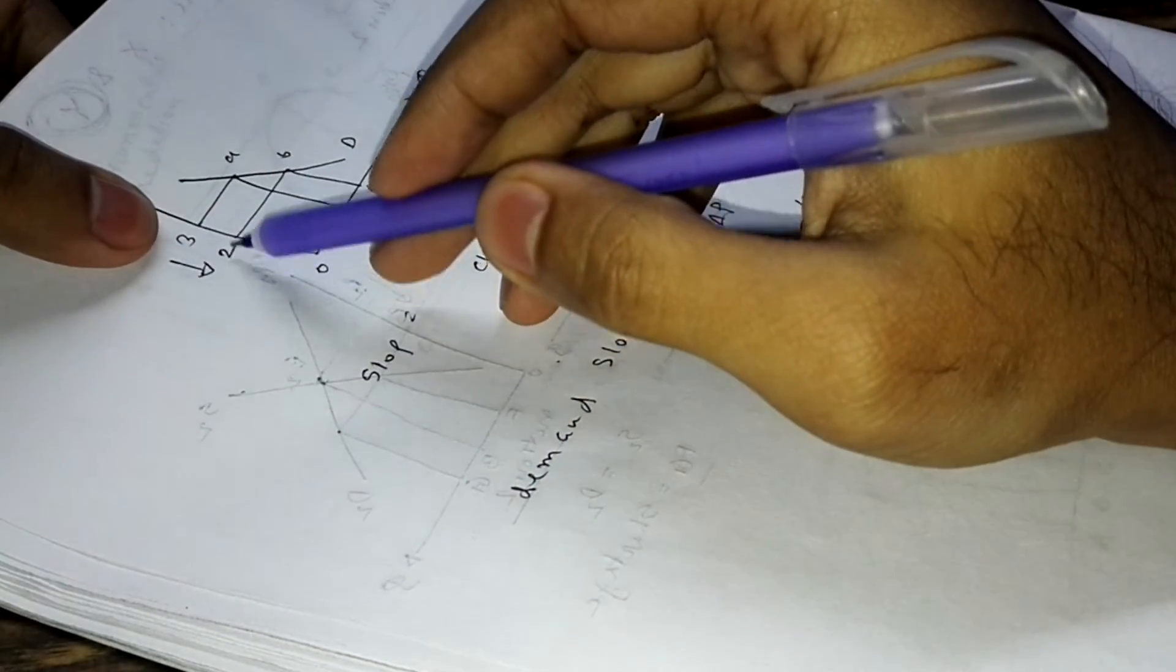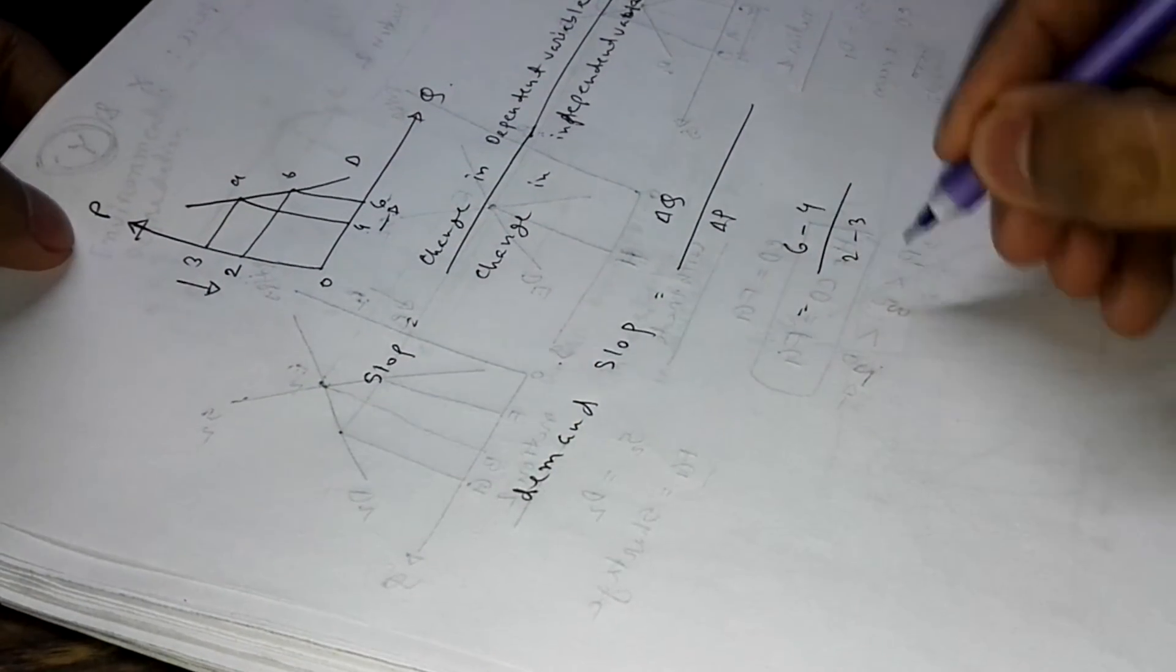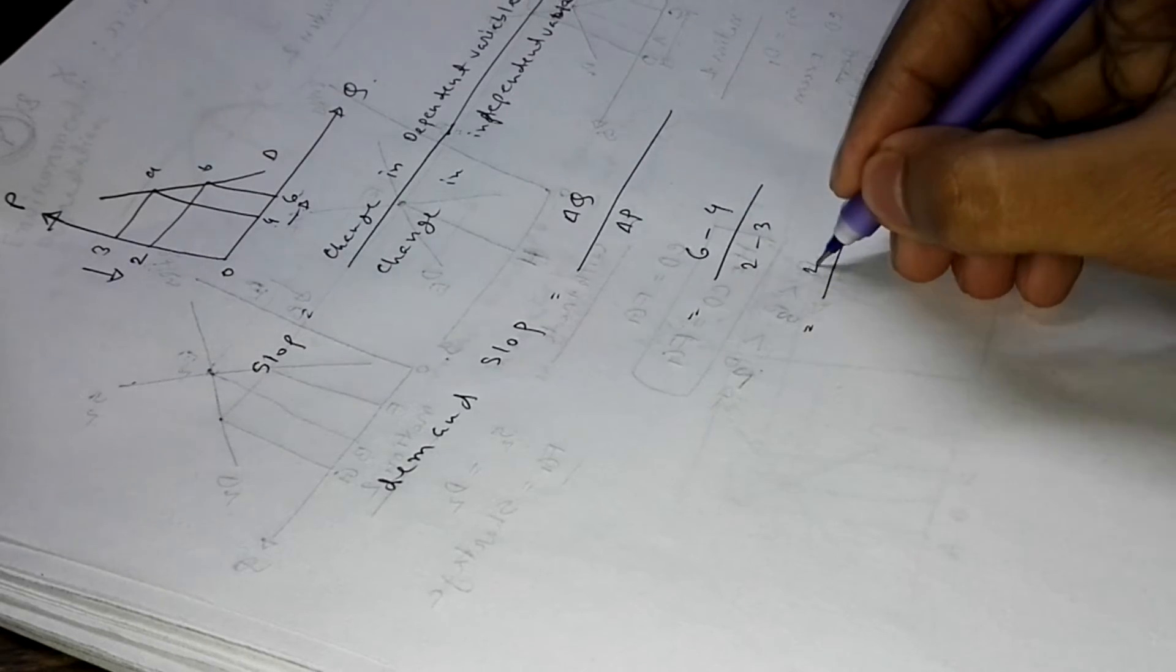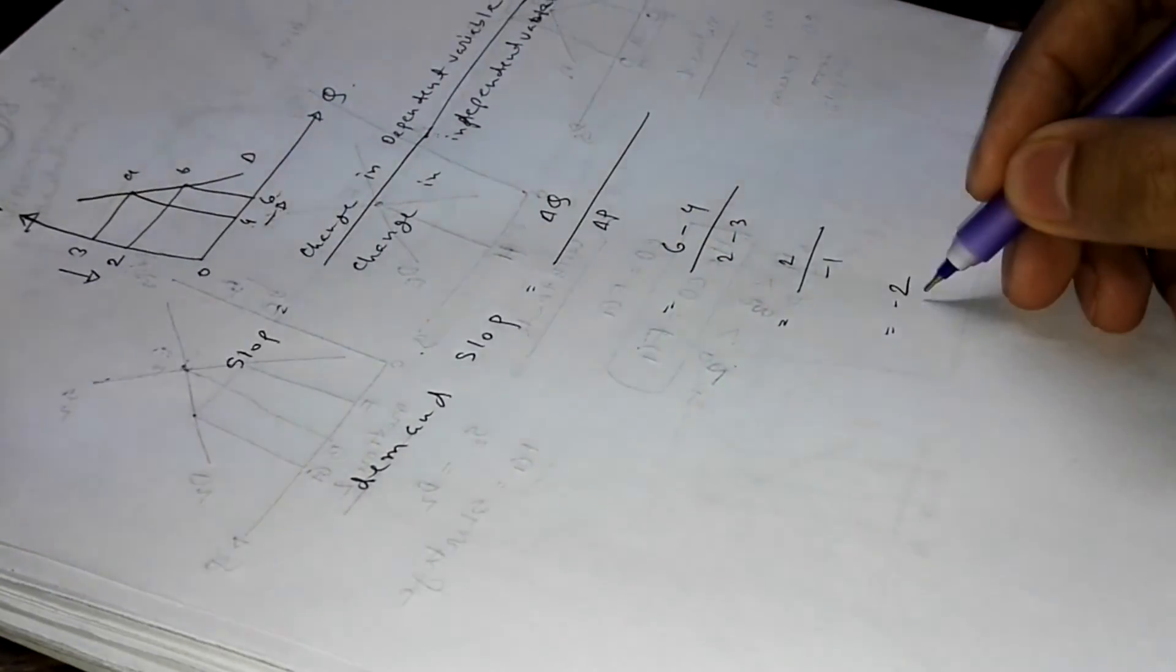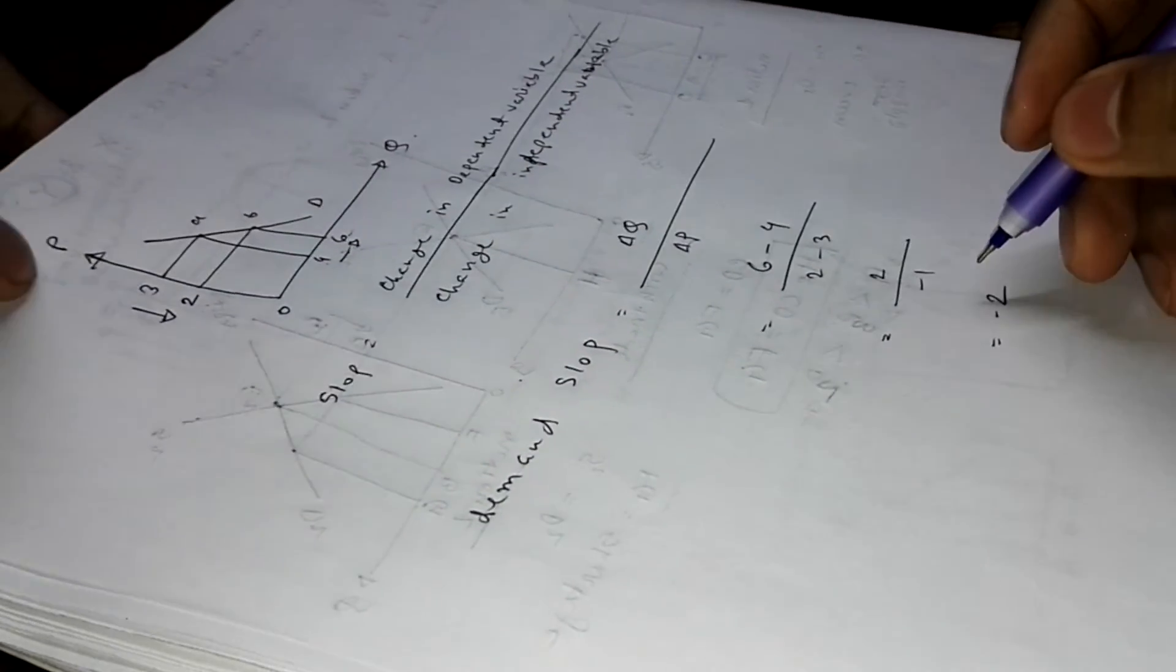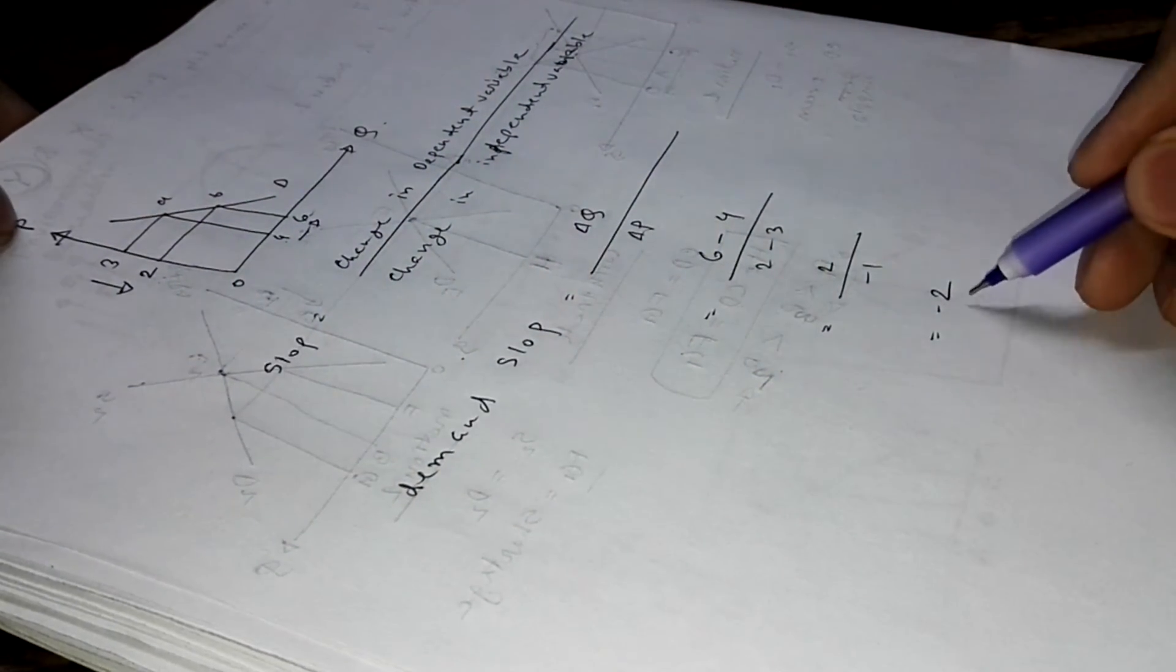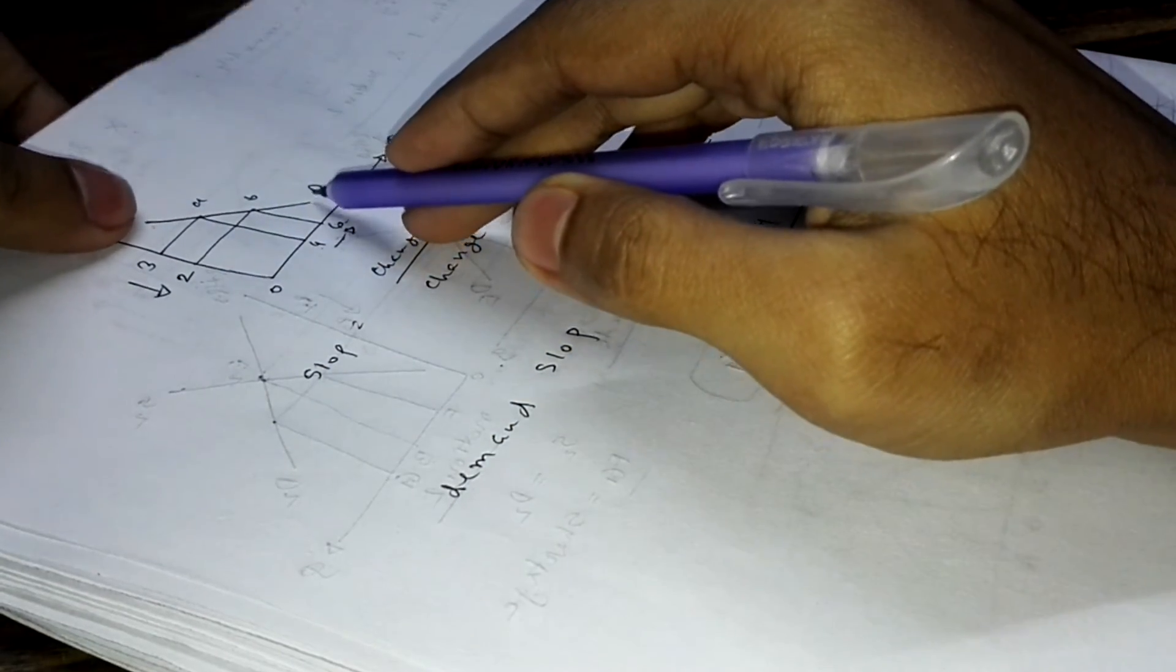And the second point for price is 2, so 2 minus 3. So that is 2 and it's minus 1, so our slope is minus 2 for this demand curve, which is negative. So we can say as the slope is negative, the curve must be downward sloped.